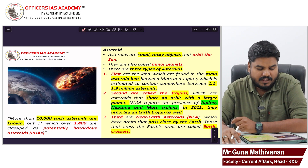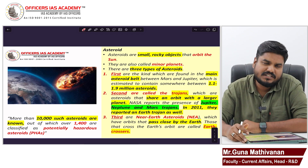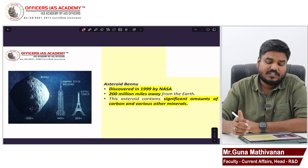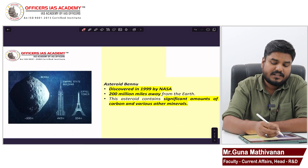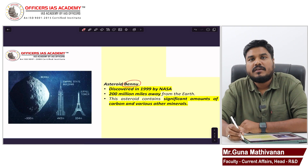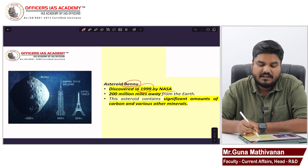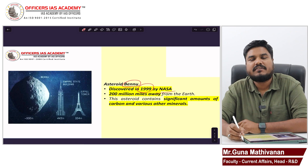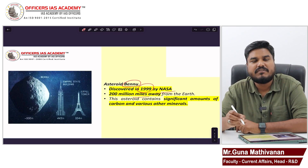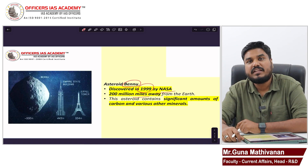We have around 10,000 such potential near-Earth asteroids. One such asteroid is Asteroid Bennu, discovered in 1999 by NASA. It is around 200 million miles away from Earth and is rich in carbon and various minerals.